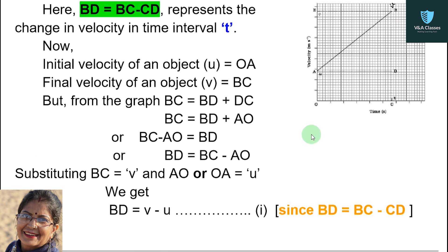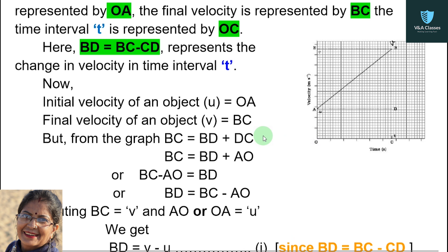Now, OA will be symbolized by what? And BC will be symbolized by what? Initial velocity of an object: U equals OA — so OA is represented by U. Final velocity of an object: V equals BC — so BC becomes the final velocity. But from the graph, BC equals BD plus DC.